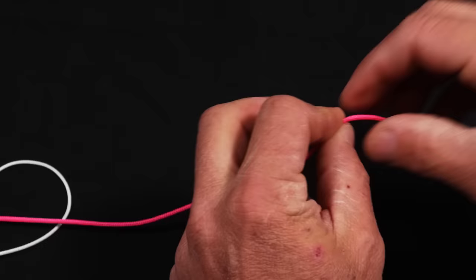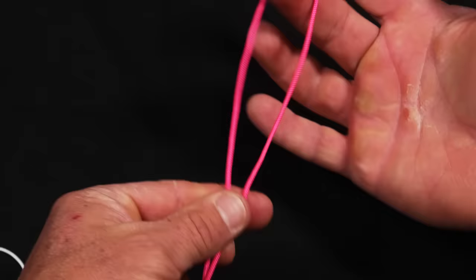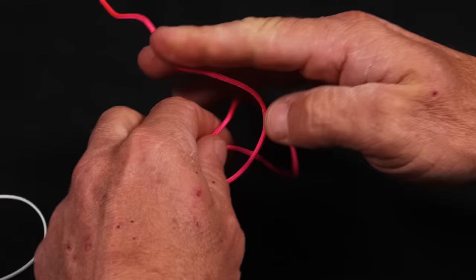Or if you want to set up a fishing reel from start to finish with the Uni knot, all we have to do is we're going to tie another Uni knot right here with nothing in it. We're just going to roll this around, leave an open loop, we're going to go one...